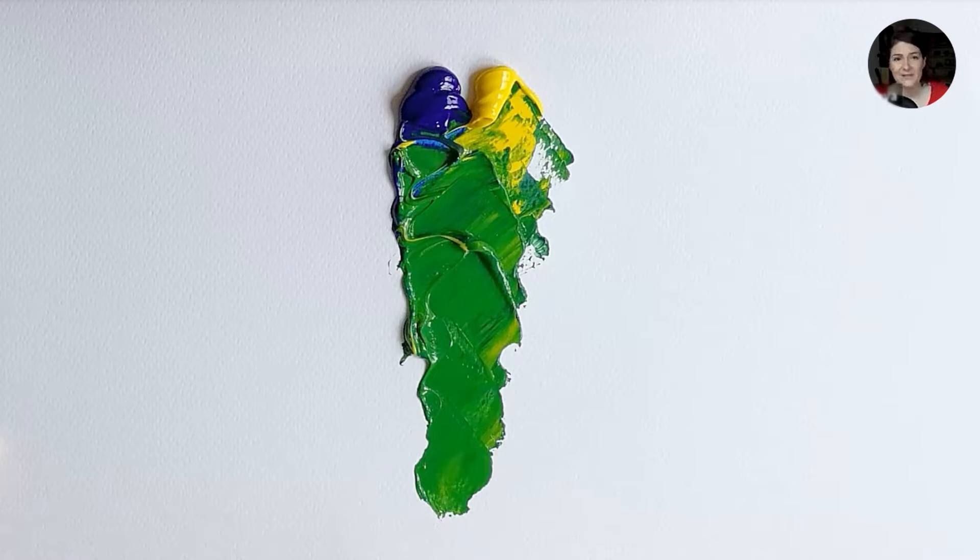So in real life, blue and yellow make green. And notice how dark this blue pigment is. It's called phthalo blue, and it produces this beautiful grassy green when mixed with yellow.